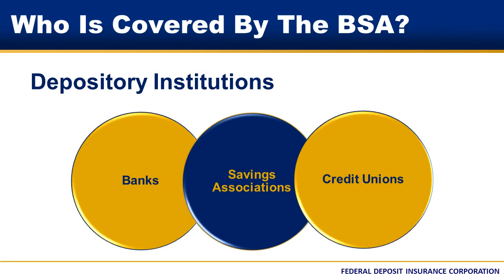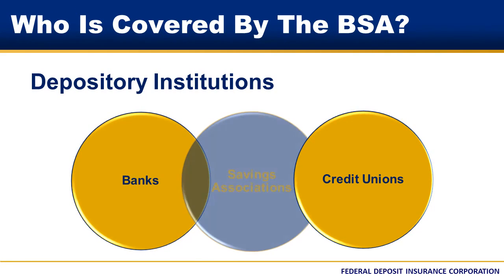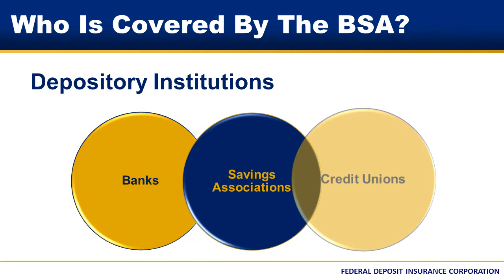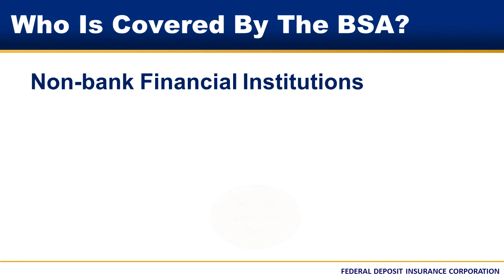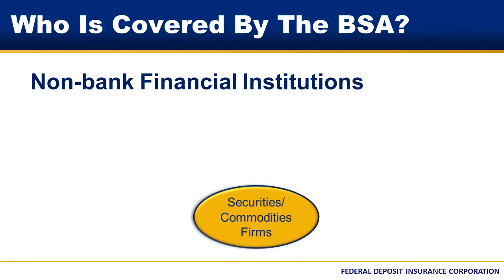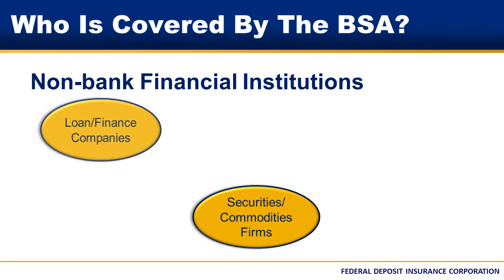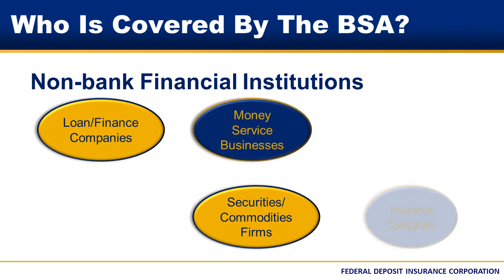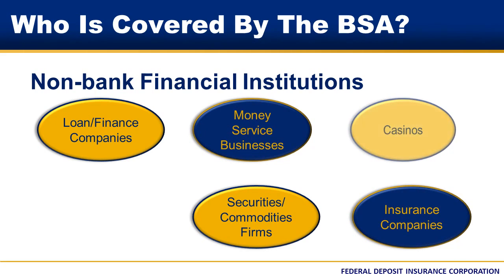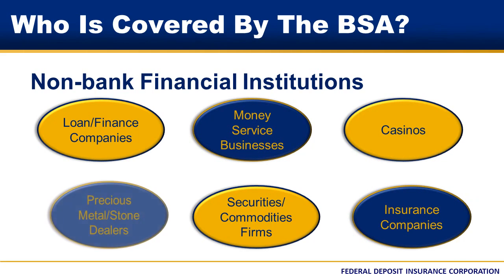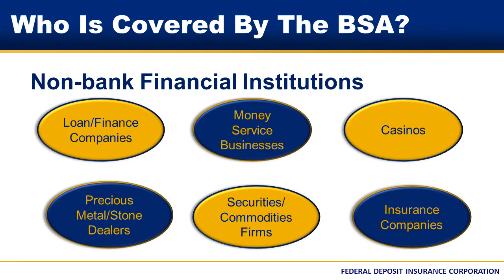Provisions of the BSA cover traditional depository institutions, such as banks, savings associations, and credit unions. The BSA also applies to non-bank financial institutions, such as securities and commodities firms, loan or finance companies, money service businesses, insurance companies, casinos, and dealers in precious metals, stones, and jewels. For purposes of this presentation, we will focus on BSA and AML requirements as they relate to depository institutions.